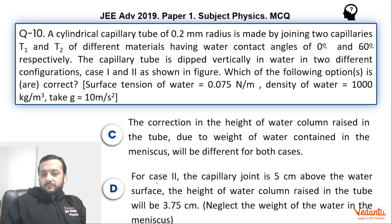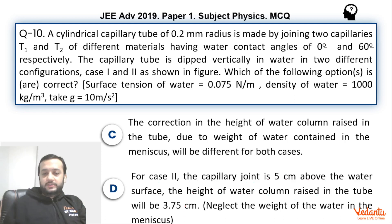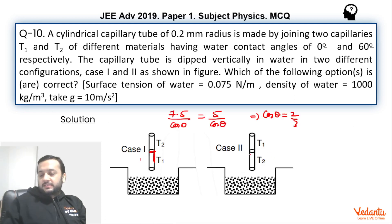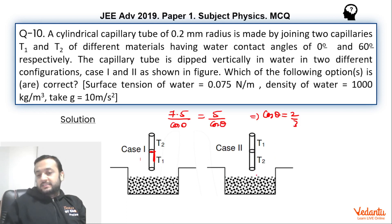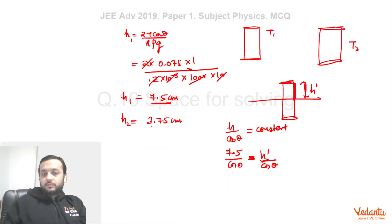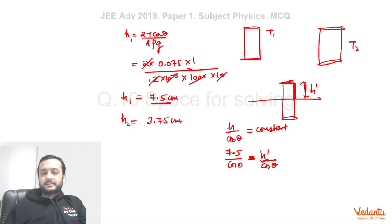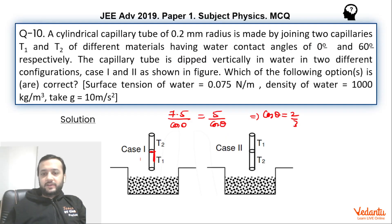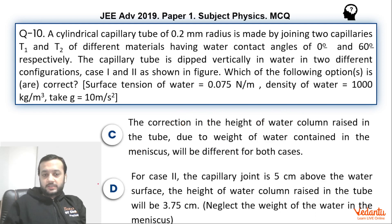Let's see option D first. For case 2, the capillary joint is 5 cm above the water surface. The height of the water column raised in the tube will be 3.75 cm. In this case T2 is below, and water only wanted to rise 3.75 cm in T2 material. We are allowing 5 cm of height, so water has no problem and rises up to 3.75 cm. Option D is correct.